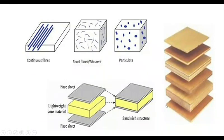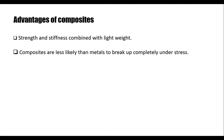The advantages of composites: strength and stiffness combined with lightweight. Composite materials are light in weight, having good strength and stiffness. Stiffness is the resistance of a material to deformation. Composites are less likely than metals to break up completely under stress. When a stress is applied to the composite material, it will not break with that much ease.